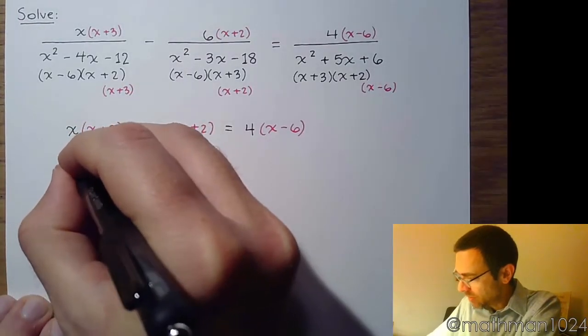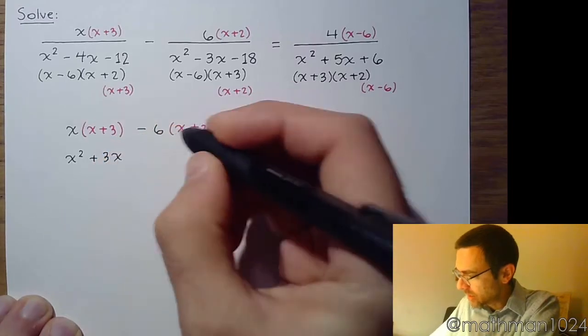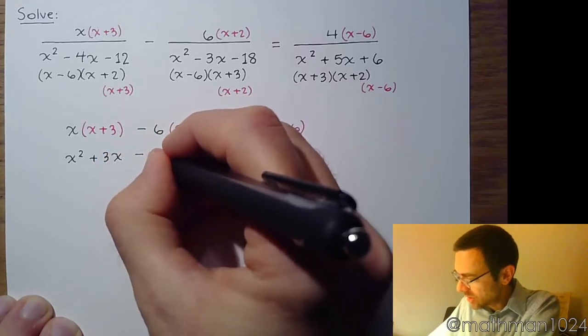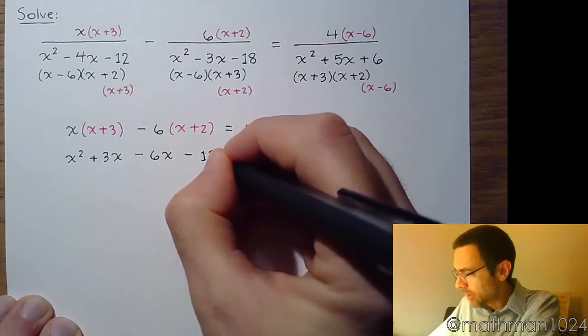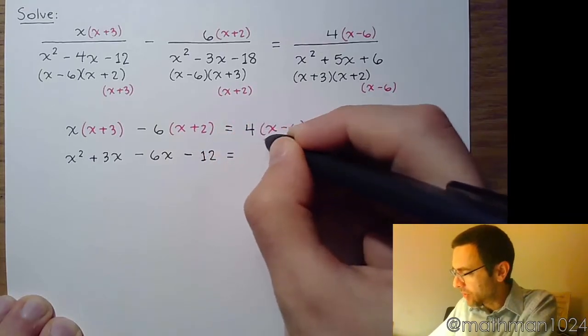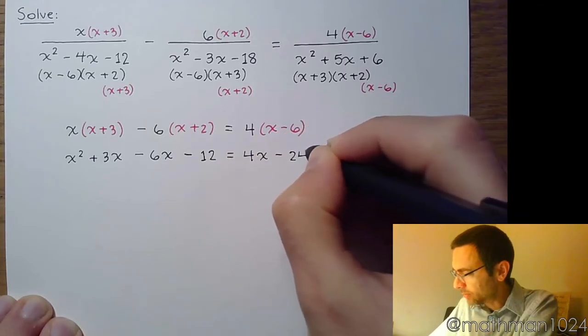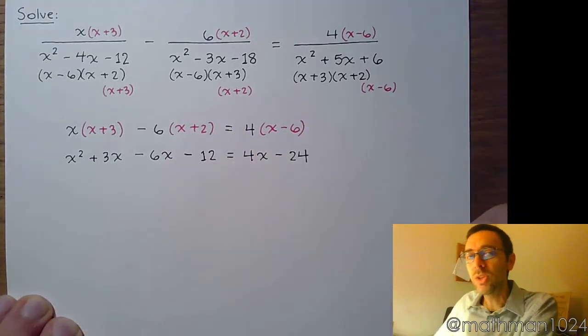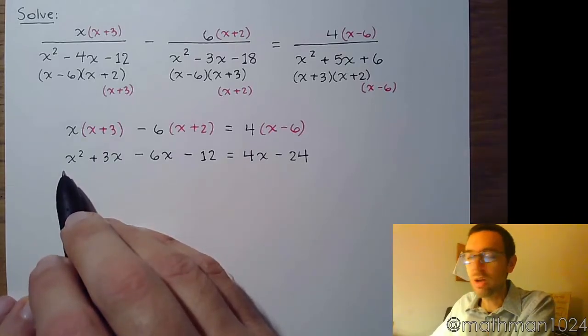Now we can multiply, distribute. So we get x squared plus 3x. Distribute the negative 6, watch your signs, that's negative 6x minus 12. And distribute the 4, so that's 4x minus 24. You see that we have something that's quadratic, so that means everything should be on the same side.